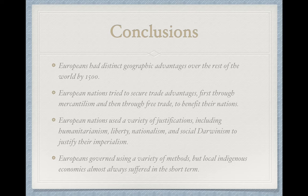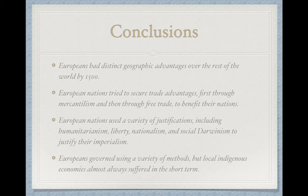Just some basic conclusions: Europeans had distinct advantages over the rest of the world by about the year 1500 and exploited them. European nations tried to secure trade advantages first through mercantilism and then through free trade in order to benefit their own nations—even though they advocated for free trade, they were doing this so they could have the most robust economies to actually beat other countries. European nations also used a variety of justifications for their imperialism and governed through a variety of methods. Please ask questions in class as you have them.